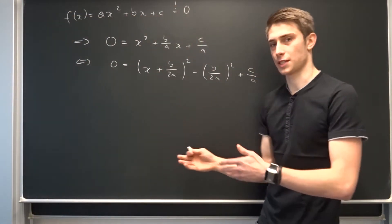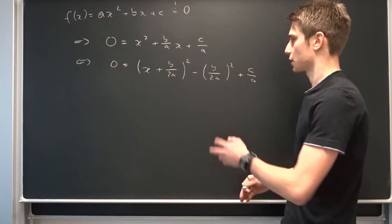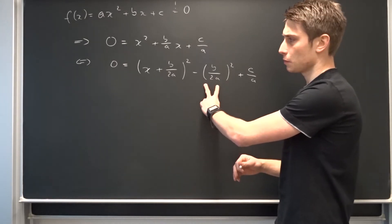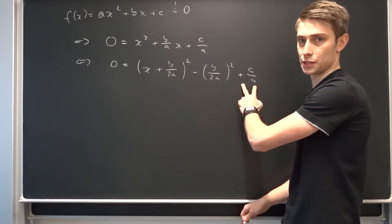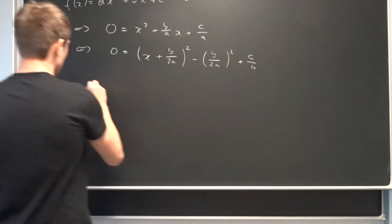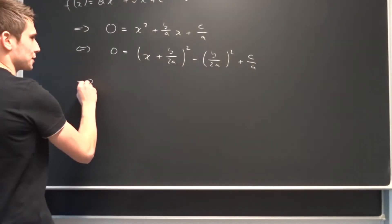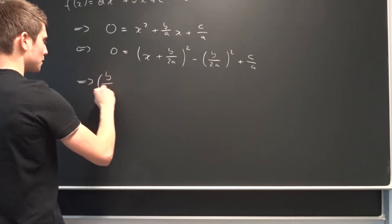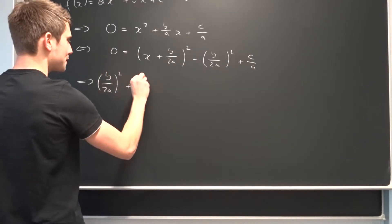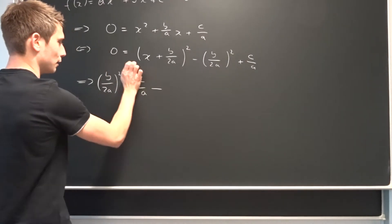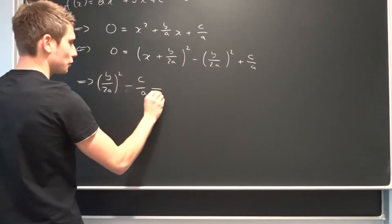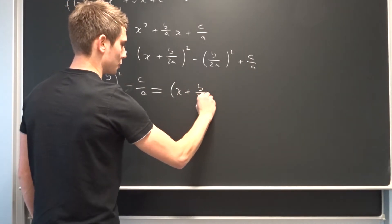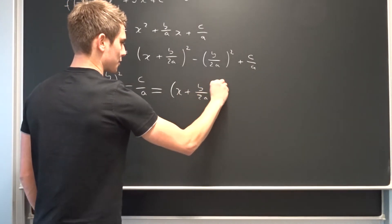Now we can bring some stuff to the other side. We can add this term on both sides and subtract this term on both sides. So what we end up with is b over 2a squared minus c over a, equals x plus b over 2a, all squared.